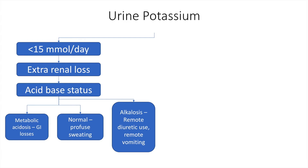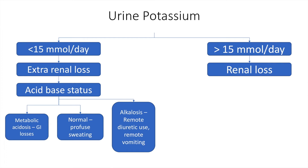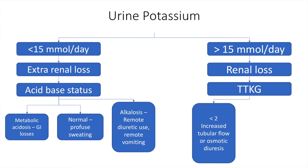If the 24-hour urine potassium is more than 15 millimoles per day, this is because of a renal cause. It is the job of the kidney to conserve potassium; if it is unable to do so, potassium is lost in the urine causing hypokalemia with elevated urine potassium. Once we have ascertained that hypokalemia is due to increased renal loss, we evaluate the trans-tubular potassium gradient, or TTKG. The TTKG reflects the amount of potassium the body is willing to conserve through a gradient across the tubules. If the TTKG is less than 2, this indicates increased tubular flow or osmotic diuresis. However, if the TTKG is high, there is an issue with distal potassium secretion, and we must look at the patient's blood pressure and volume status.